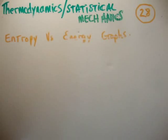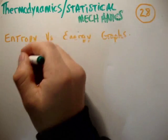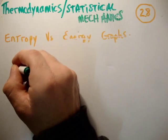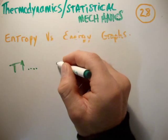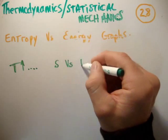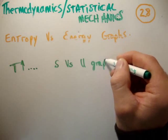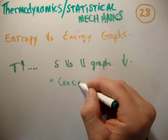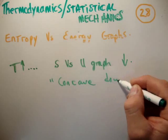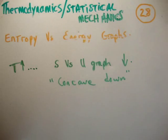All right, so increasing temperature. Well, that corresponds to... if the temperature goes up, well, then the S versus U graph goes down. So it's concave down. Increasing temperature, concave down. That's what increasing temperature is.